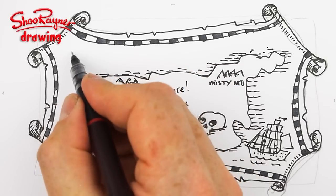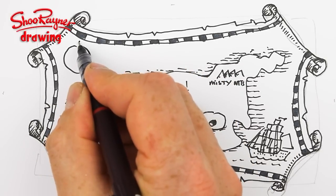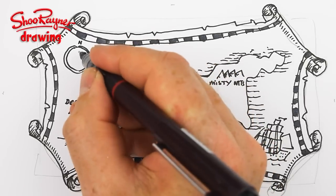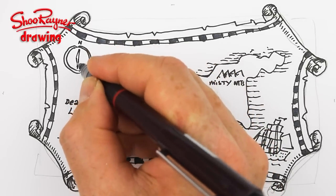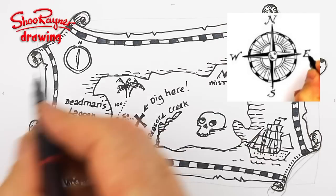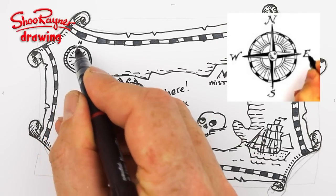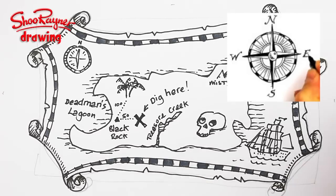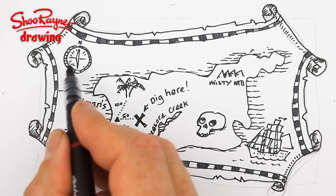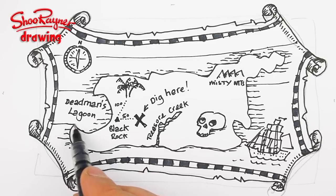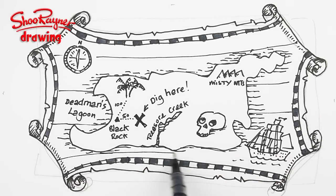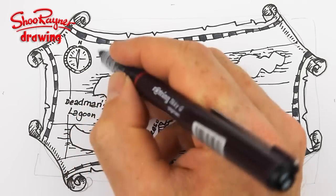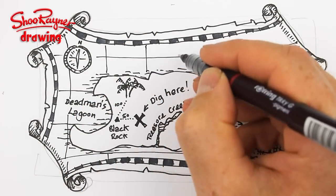Up here you're going to want to have a compass going north. I did a much more complicated compass on Draw Stuff Real Easy, so go and have a look at that little video. And then you've probably got the longitude and latitude lines coming in there as well, which will curve around slightly because of the way the parchment's moving.